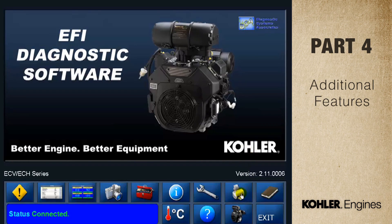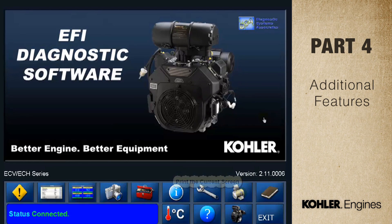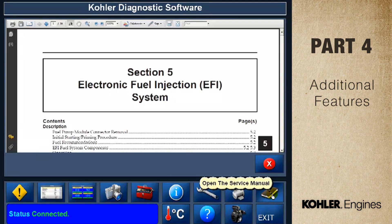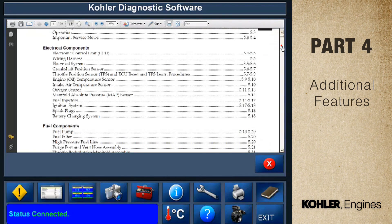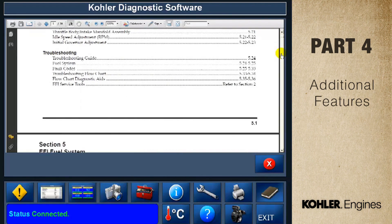Here's the print button to use when printing reports. This is the service manual icon. The service manual is a browser that gives you access to the appropriate Kohler factory service manuals.